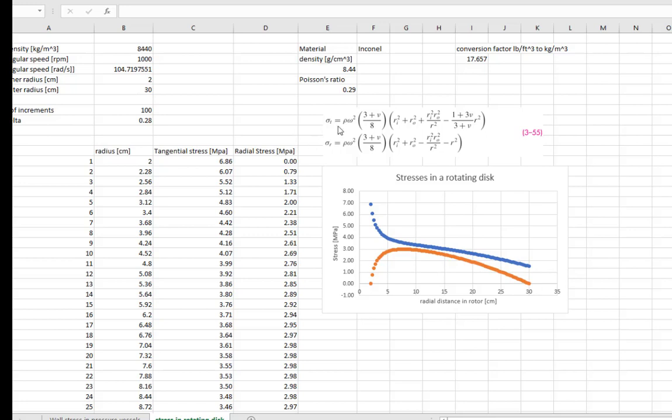I plot the tangential stress using this equation here and the radial stress using this equation here. And we look at the sensibility of these answers to get a notion of whether or not we've got the equations right. As this disc spins, it's trying to tear itself apart. So our hoop and our radial stresses are going to be tensile.